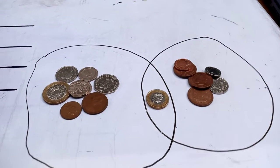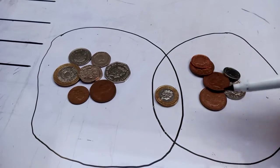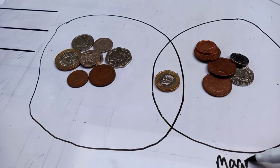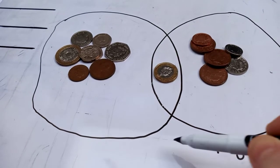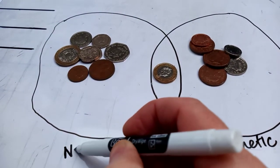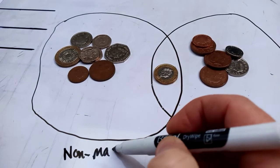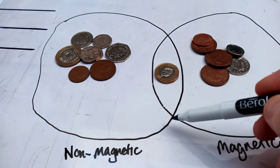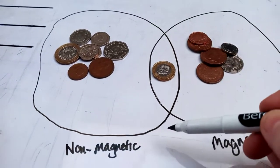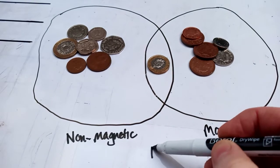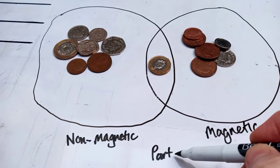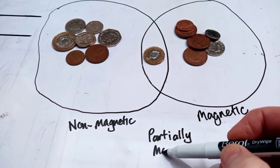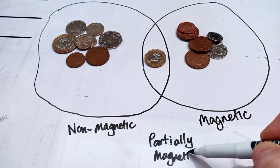And now I need to label that, otherwise I'm going to forget what's what. So here I go, this side are magnetic, this side were non-magnetic, and in the middle were the sort of magnetic, but a better word for that is partially magnetic.